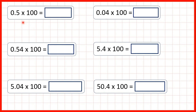Now we need to multiply decimals by 100. First we have 0.5 times 100. The way to multiply decimals is to write out the number — so 0.5 — and then copy down the decimal point so it's directly below. Then, because we're multiplying by 100, which has two zeros, the digits are moving two squares to the left.